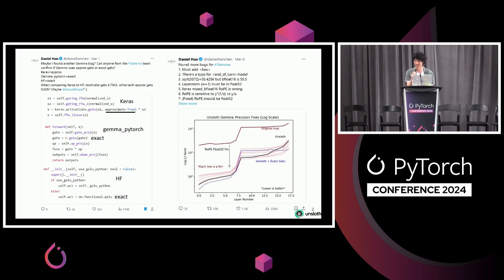I found eight bugs in Gemma and helped fix them. I also found bugs in Llama, Mistral — tokenization issues. I love finding bugs. Technically Unsloth is a brother team, so my brother's also here if you want to talk to him. We just came from Australia about two months ago. SF's great.